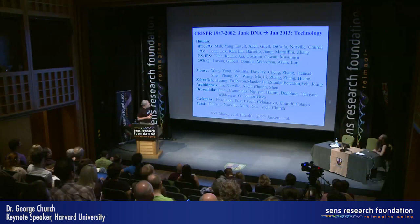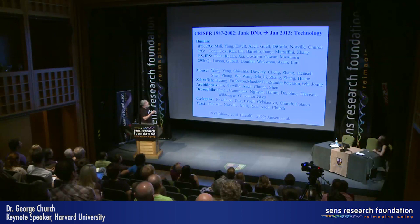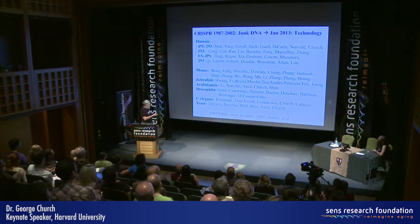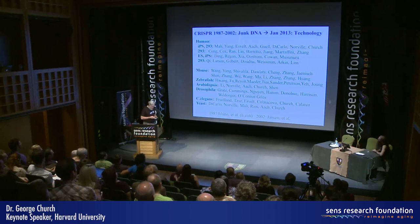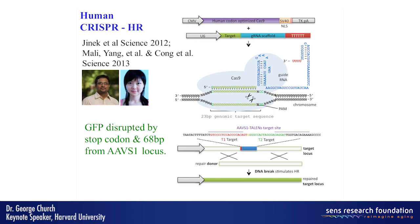It wasn't until January of this year that we realized CRISPR could be used as a technology, and we published its use in human cells. Since then it's been used in almost every model organism — just in eight months, all these groups — and it's really a wonderful, very sharing community. This is Prashant Malie and Liu Han Yang, who were co-first authors on that January paper and many papers since then. They were focusing on homologous recombination — not merely adding a new gene or making a mess with non-homologous end joining, but getting a precise targeting.